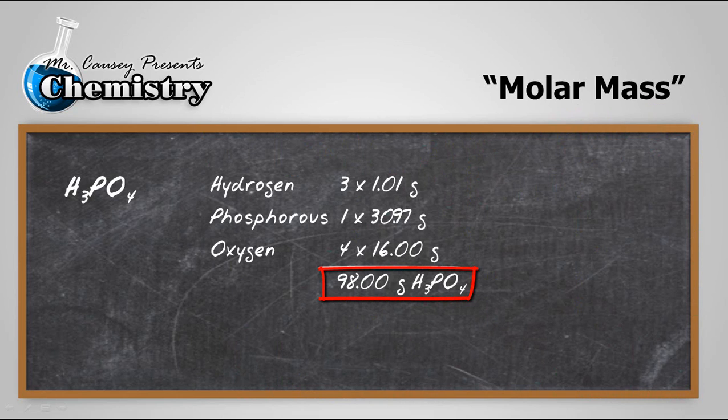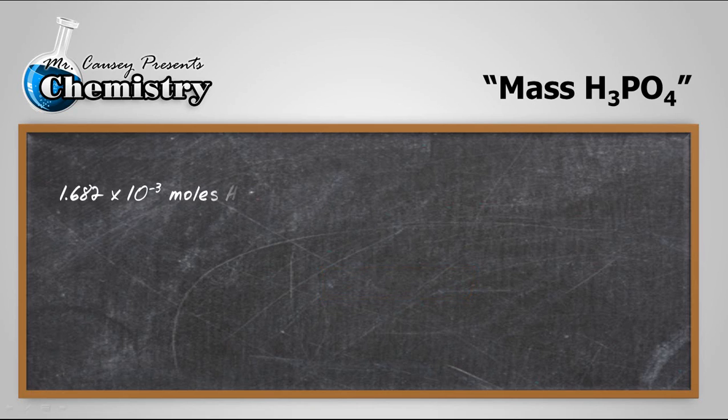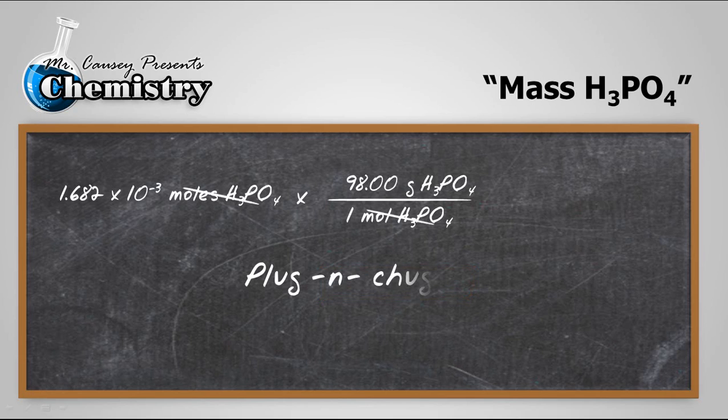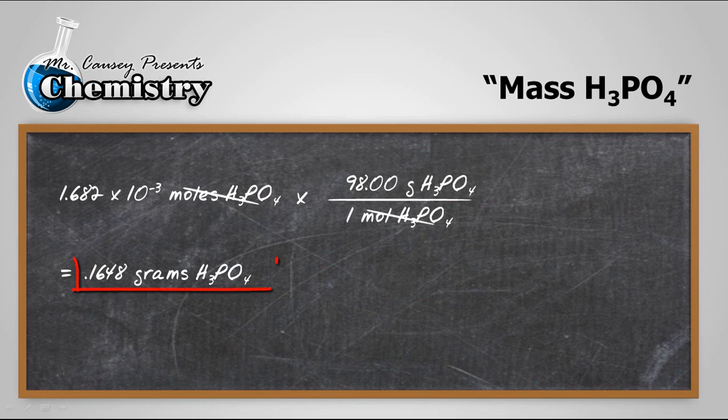Now we can use that to help us determine the mass. We know there are 1.682 times 10 to the negative 3 moles of phosphoric acid. Multiply that to the moles or grams per mole. And cross that out. Plug and chug. And we have our answer. 0.1648 grams of phosphoric acid is what we have. Great.